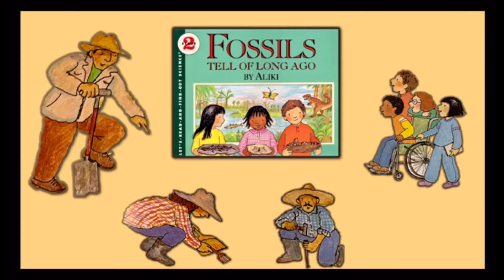Millions of years ago a fly was caught in the sticky sap of a tree. The sap hardened and became a fossil called amber. Amber looks like yellow glass. The fly was perfectly preserved in the amber. Other insects have been preserved in amber too. Here's the fly and a spider, ants, a cockroach — they all got stuck in the sticky sap.